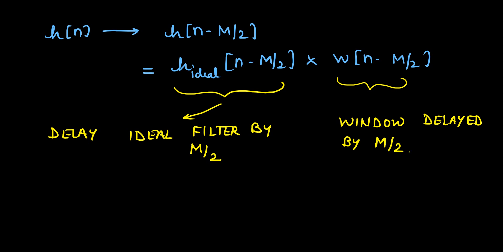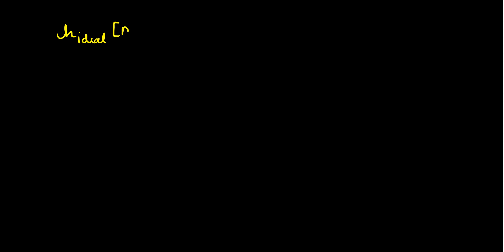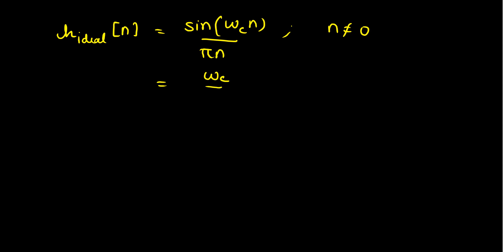Now if we look at the ideal filter's equation, H ideal of n is given as sine of omega_c times n divided by pi times n, and this is valid for n not equal to 0. For n equal to 0, we have omega_c by pi. Here omega_c is the cutoff frequency.